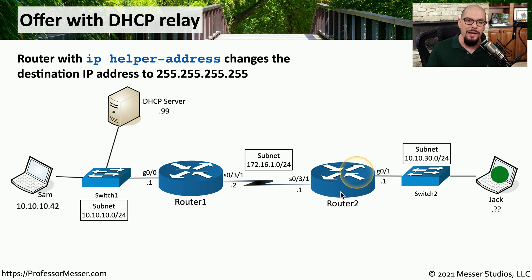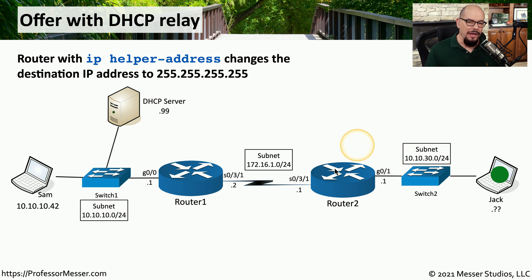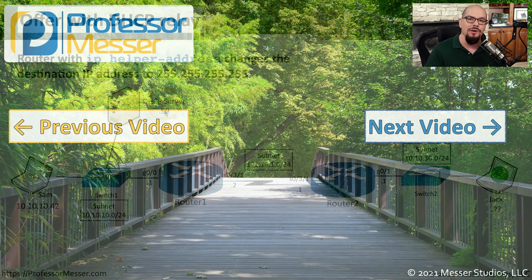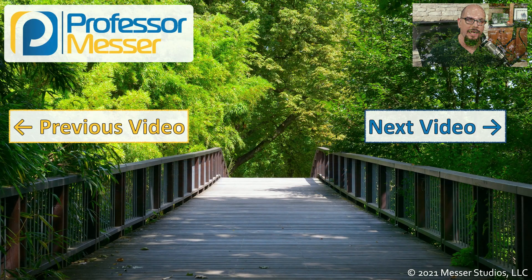The rest of the process continues exactly the same way it did for Sam, except now we have a relay in the middle to handle the request and the acknowledgement so that Jack can have his IP address configured by a DHCP server that sits on a different broadcast domain.